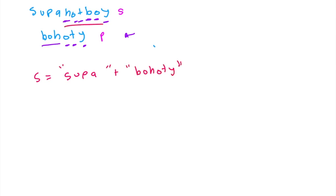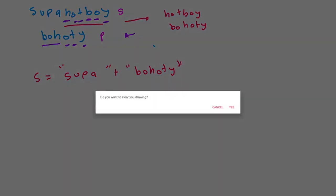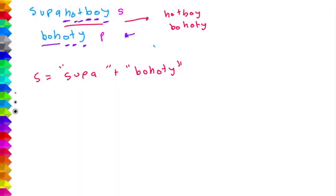The way we get this is: if we take the set of characters H-O-T-B-O-Y, we can rearrange this to B-O-H-O-T-Y since we have the same amount of characters. What we essentially did in our first step was split S into two strings — S' plus P — where we took out the characters of P from S. S' basically consists of all the letters remaining after we take out P from S.